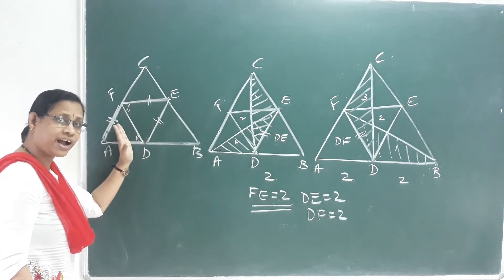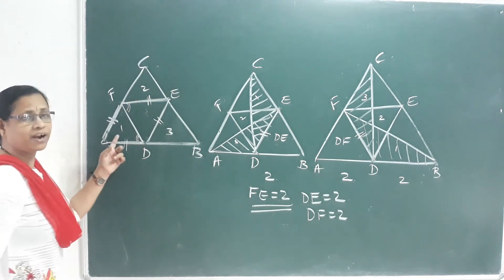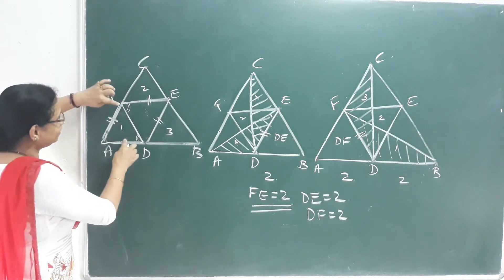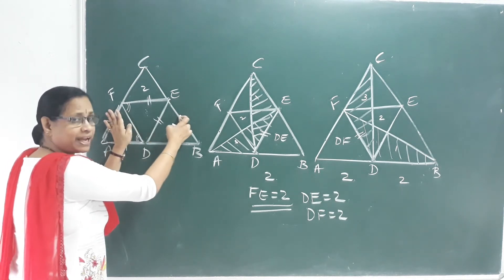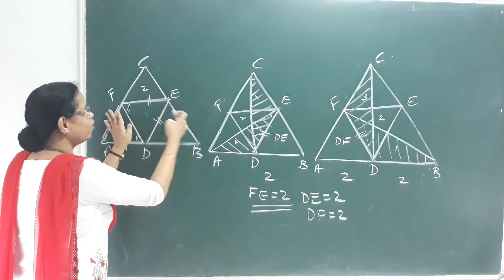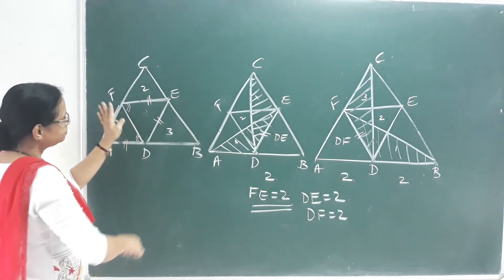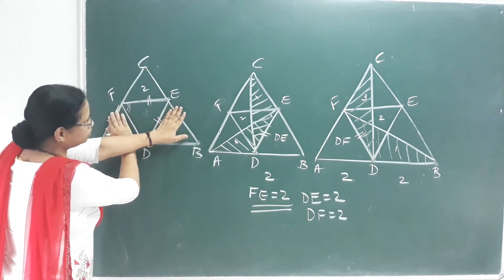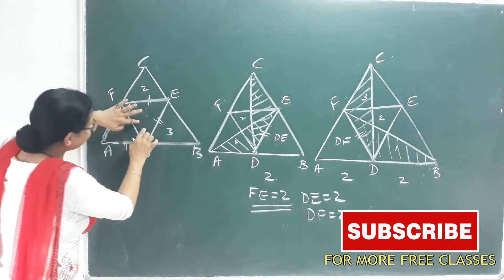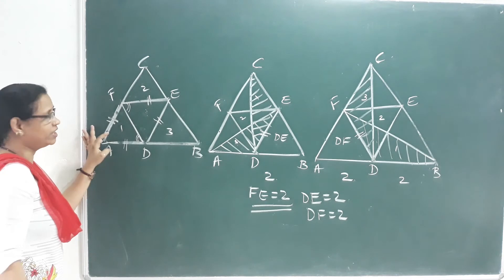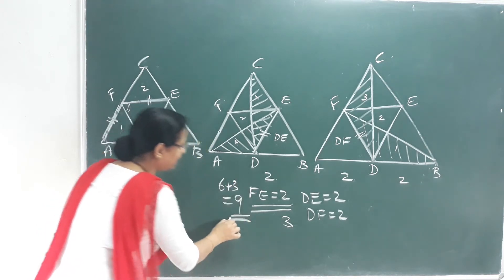This is a parallelogram. The diagonal divides it into two equal triangles. If the blue triangle equals these three triangles by parallelogram properties, then opposite sides are equal. So 6 triangles have equal area, and 3 triangles have equal area to the blue triangle.